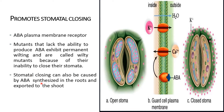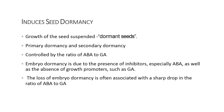Induced seed dormancy: growth of the seed is suspended in dormant seeds. Primary dormancy and secondary dormancy are controlled by the ratio of abscisic acid to gibberellic acid. Embryo dormancy is due to the presence of inhibitors, especially abscisic acid, as well as the absence of growth promoters such as gibberellic acid.